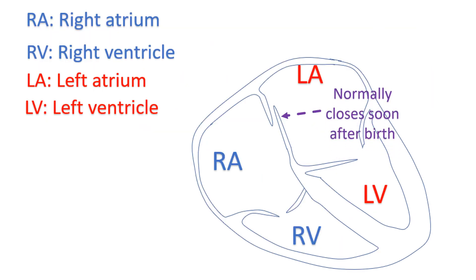Foramen ovale is an oblique opening through the wall between the two upper chambers of the heart. When the pressure in the left atrium rises after birth as the lungs become functional, it presses on the left side of the opening and closes it. If there is a residual opening, most of the time there is no leakage of blood across the PFO. But occasionally, as in straining, the pressure in the right atrium transiently rises so that blood passes from the right atrium to the left atrium across the PFO.